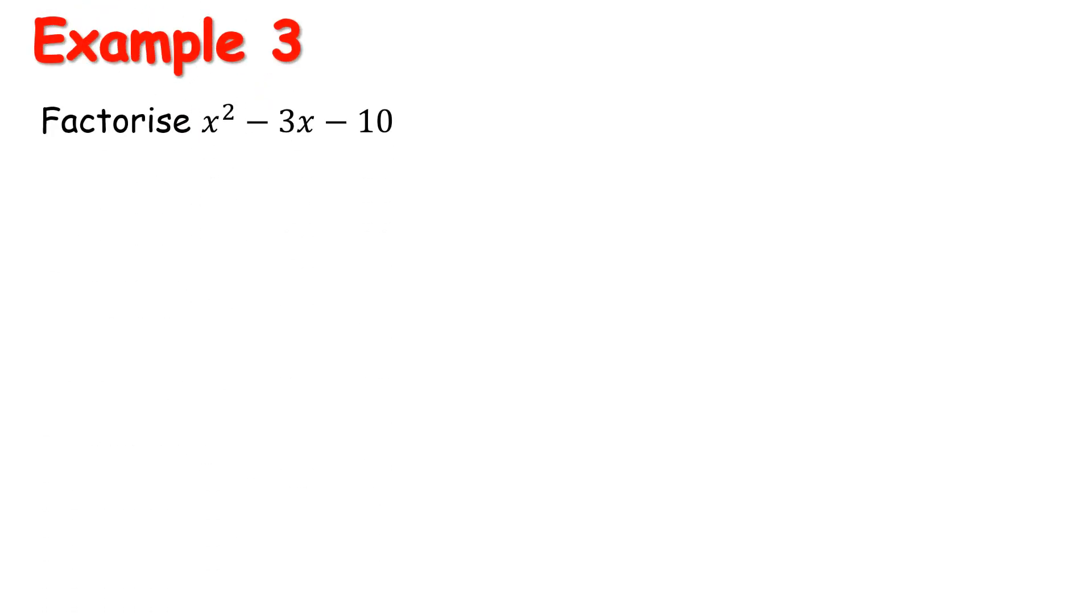So example 3, we have x squared minus 3x minus 10. Again, we're going to go to our two brackets. We're going to put x in both. The guide number here is minus 10, so different signs. So 10 and 1, 5 and 2. So we're going to have a minus 5 by plus 2. So we put minus 5 in one bracket and a plus 2 in another.